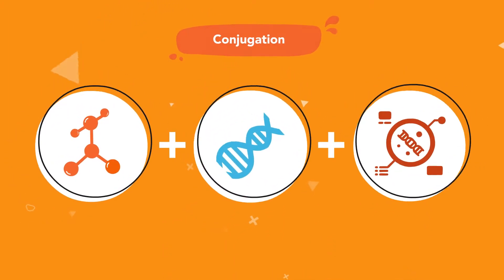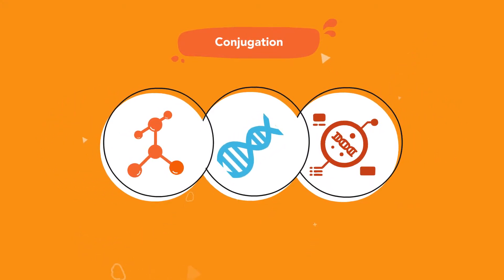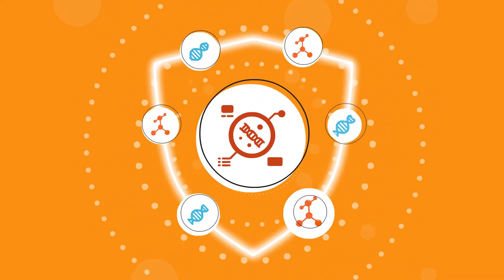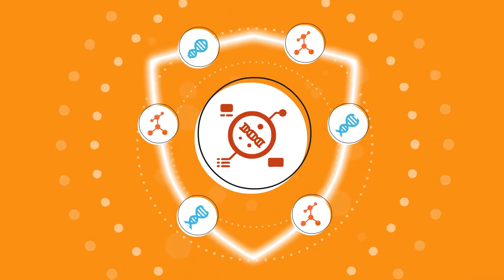Stage 2: In stage 2 of detoxification, glutathione and other enzymes bind toxins with protective compounds in a process called conjugation. This neutralizes, inactivates, and makes them more water soluble so they can be eliminated from the body.